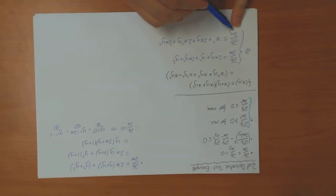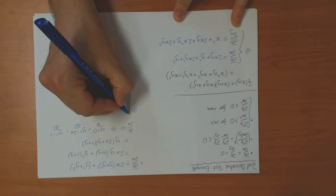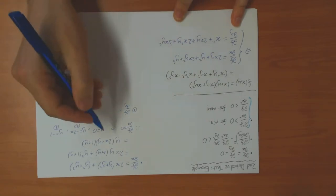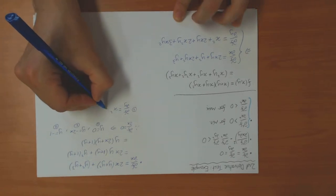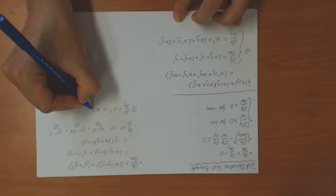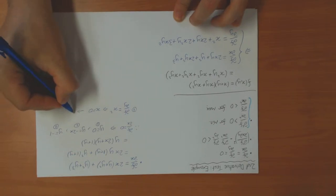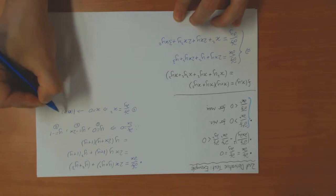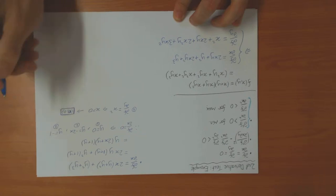Now we check the y-derivative in each of these three cases. In case 1, if y = 0, then df/dy reduces to just x², so for this to be zero we need x = 0. That gives the solution x = 0, y = 0.